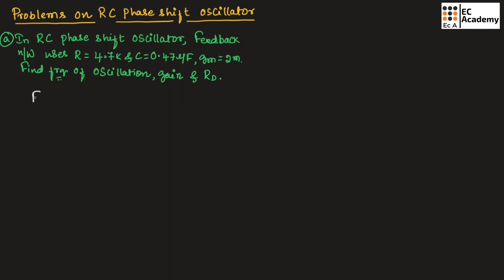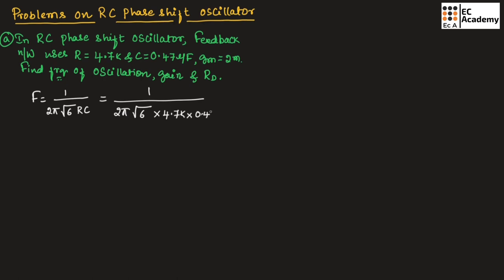We know the frequency of oscillation of RC phase shift oscillator is given as f = 1 / (2π√6 · RC). Substituting R = 4.7 kΩ and C = 0.47 μF, we get the frequency of oscillation as 29.41 Hz.